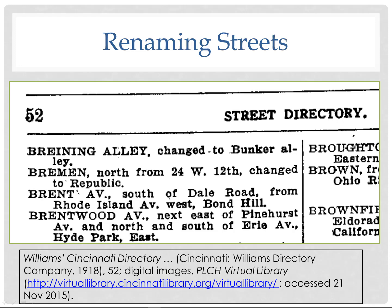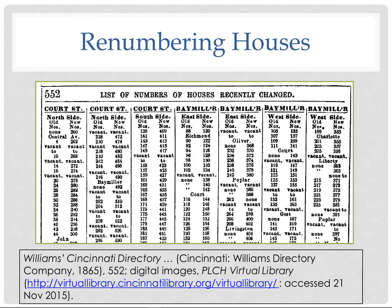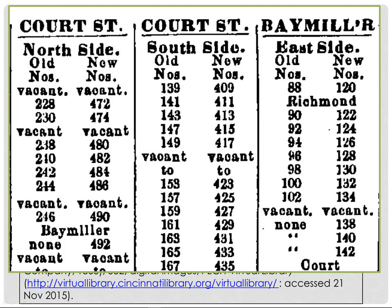Here's an example of street renaming: the 1918 Cincinnati directory tells us that Bremen was renamed Republic due to anti-German sentiment during World War I. A family may appear to have moved between 1910 and 1920 when the street name simply changed. Similarly, in 1865, a city directory documents extensive house renumbering, giving old and new numbers street by street. So your ancestors may not have moved — their address may simply have changed.